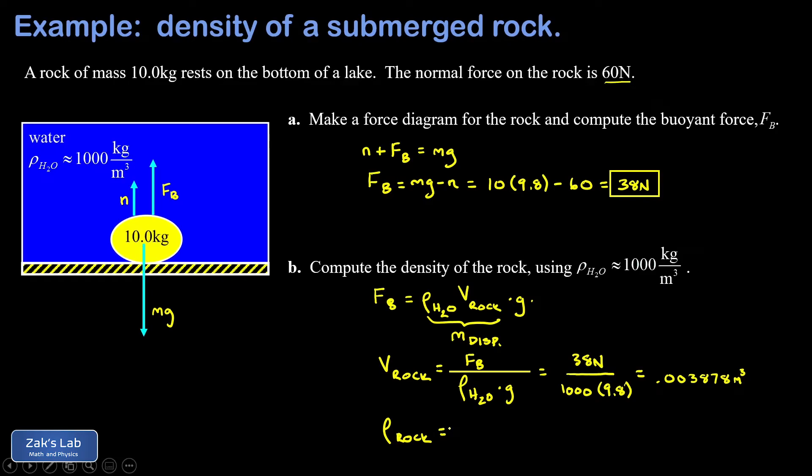This gives us an approximate volume of 0.003878 cubic meters. Finally, to get the density of the rock all we have to do is take the mass of the rock and divide by its volume: that's 10 kilograms over 0.003878 cubic meters. To three significant digits we get 2580 kilograms per cubic meter for the density of the rock and we're done.